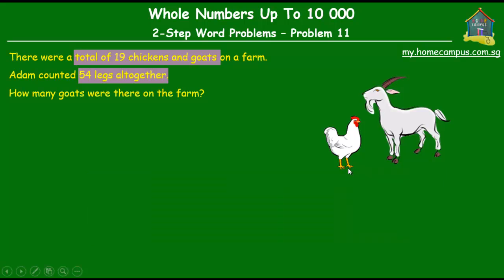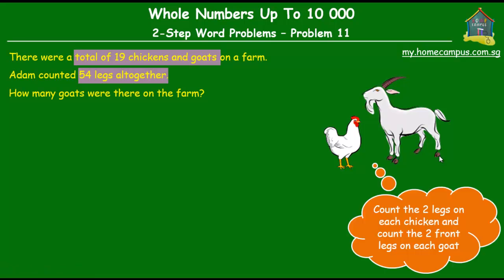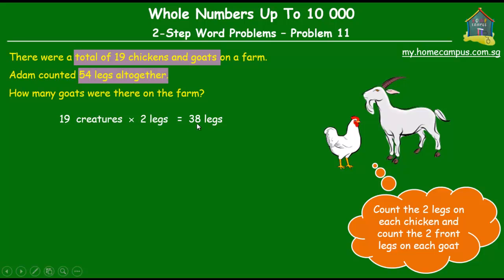Each chicken has two legs, and each goat has two front legs and two back legs. So both types of creatures have at least two legs each. We start by counting two legs on each chicken and only the two front legs on each goat. Since there were 19 creatures in all and we have counted two legs on each, so far we have counted 19 times 2 legs, which equals 38 legs.